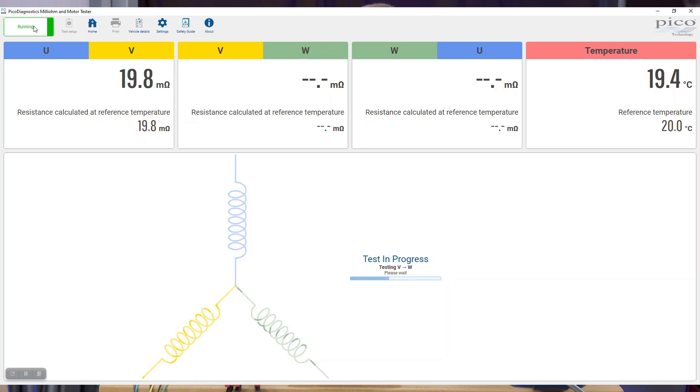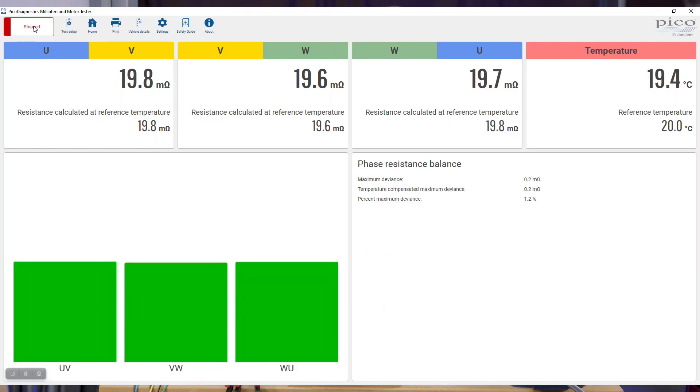Then we'll reverse the current for the diode effect, this EMF that can be formed from dissimilar metals at connection. We now go to V-W, again reverse the current. So far so good, we're looking for balance, that's what's important here. Finally W to U and we are 19.7. The bar graph there informs us that this is a good motor, balance-wise it's fine.